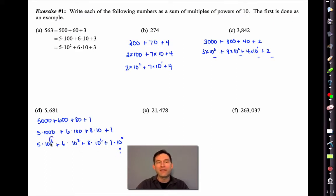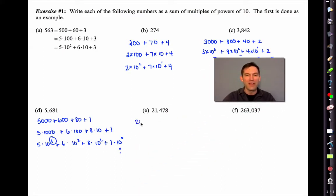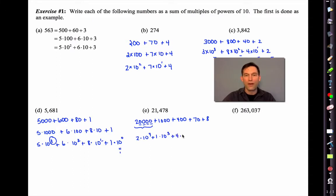We can just keep making these numbers larger and larger, and what that does is dictate the highest power. Let's do 21,478 together. That's 20,000 plus 1,000 plus 400 plus 70 plus 8. You can always figure out the power of 10 you're working with by counting how many zeros you have. So this is 2 times 10 to the fourth, plus 1 times 10 to the third, plus 4 times 10 to the second, plus 7 times 10 to the first, plus 8. Pause the video and try letter F.